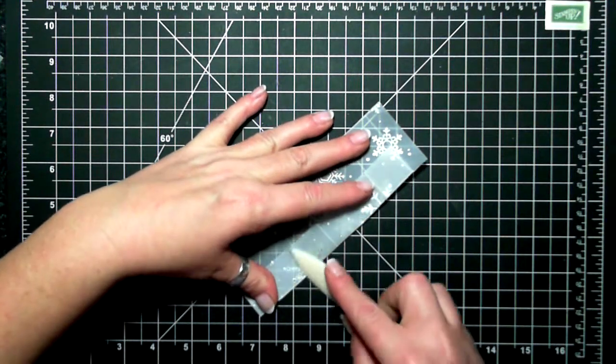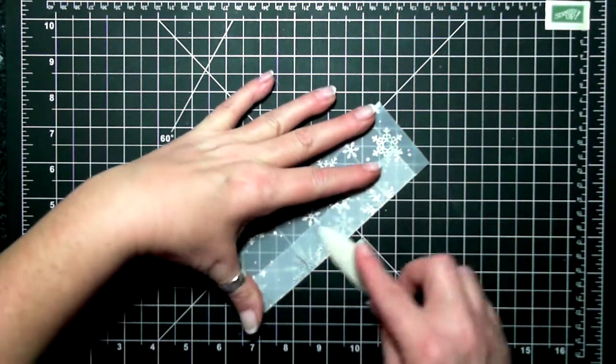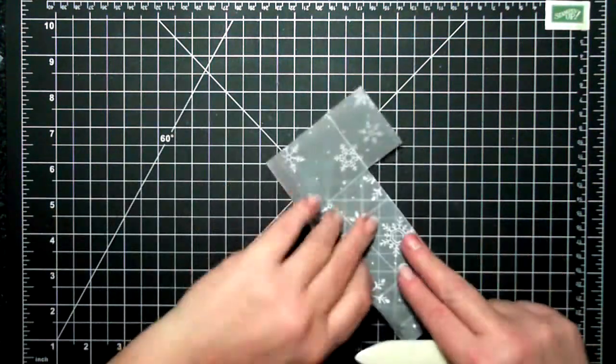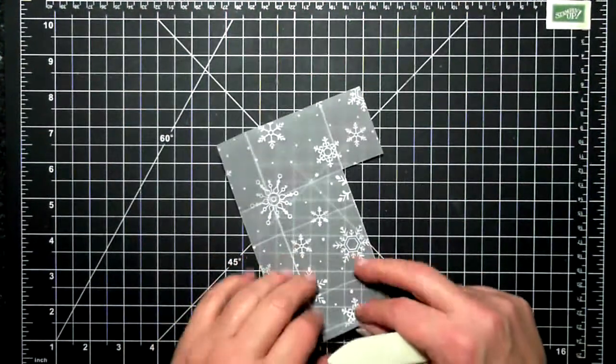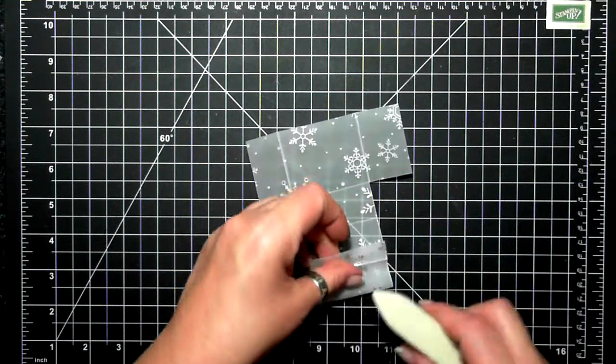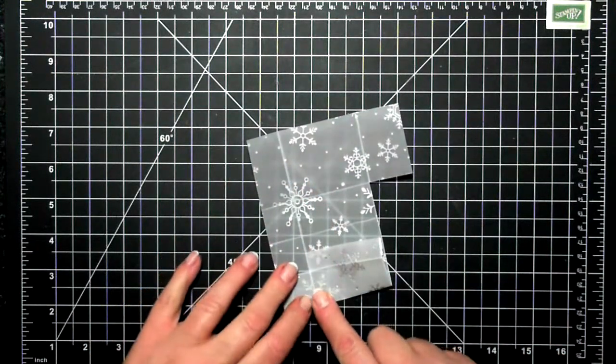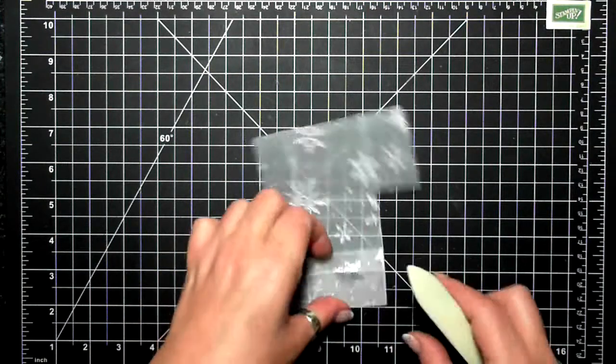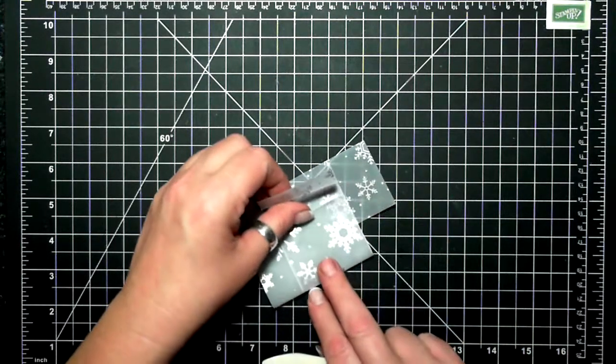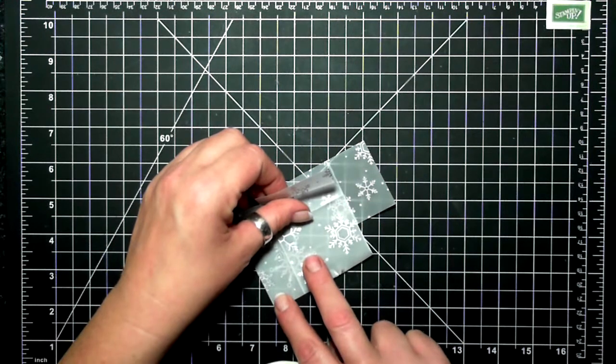Using specialty paper like this, it can be done obviously because I'm doing it, but it does take a little bit of practice because vellum has a little bit of a different treatment going on, so it's a little bit more brittle. You do want to be cautious on how you handle it.